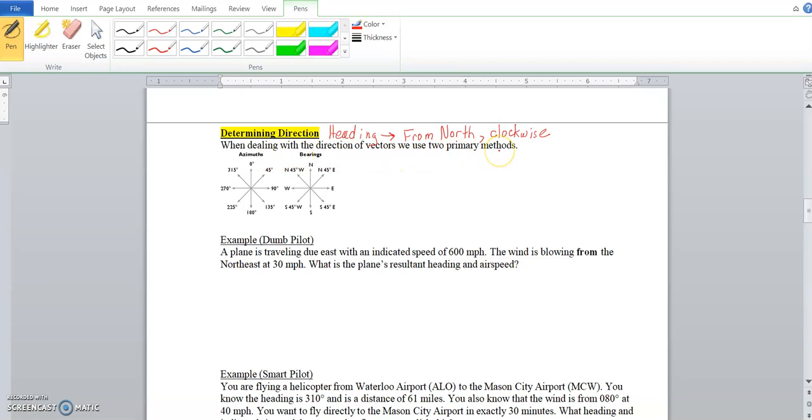Where it says dealing with direction vectors, we have two primary methods that is specific to these two. There's really three ways if you want to account for the x-axis and like the unit circle style, but the two here the azimuth and the bearings.